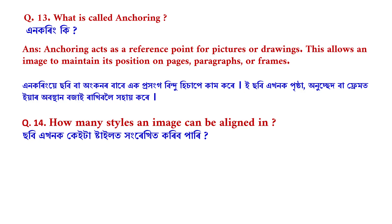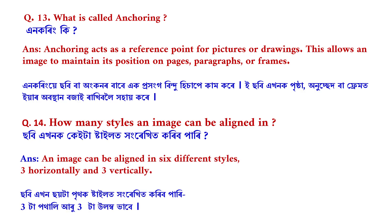The next question: how many styles can an image be aligned in? An image can be aligned in six different styles — three horizontally and three vertically.